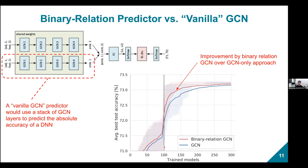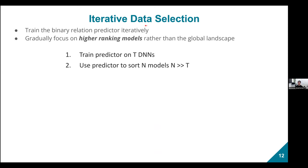Our next trick is iterative data selection. Instead of training the predictor on 100 models all at once, we do it iteratively. We start with 20 models, train the predictor on those, then use that rough predictor to sort a much larger pool of N models — which is very fast. We take the best models from that pool and add them to the next predictor training batch. We keep doing this, gradually closing in on the best models in the search space.